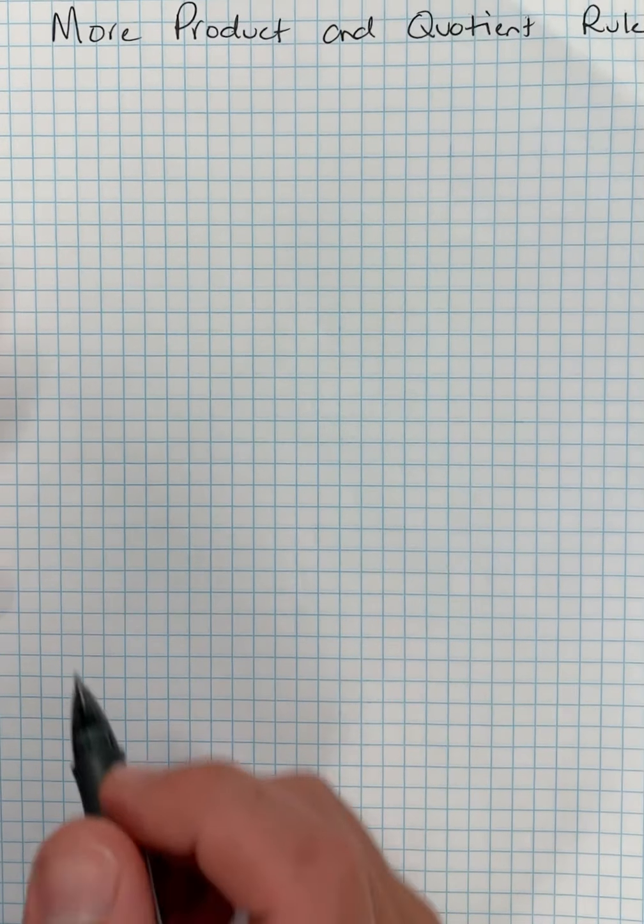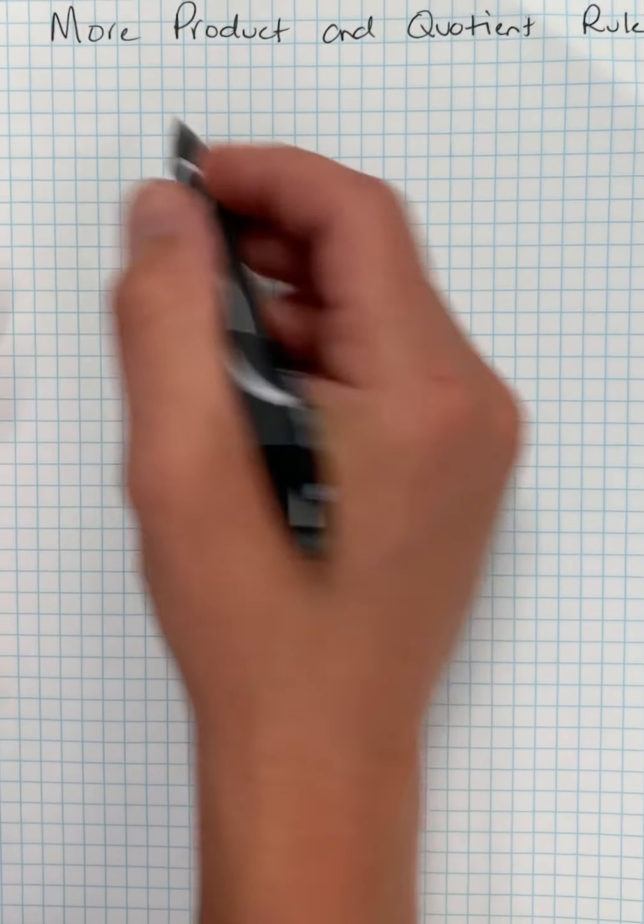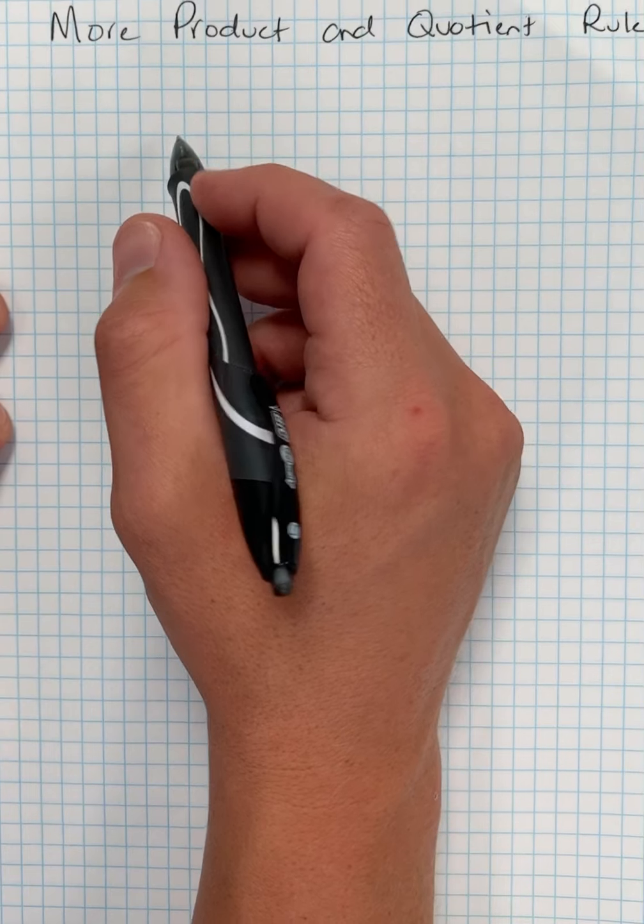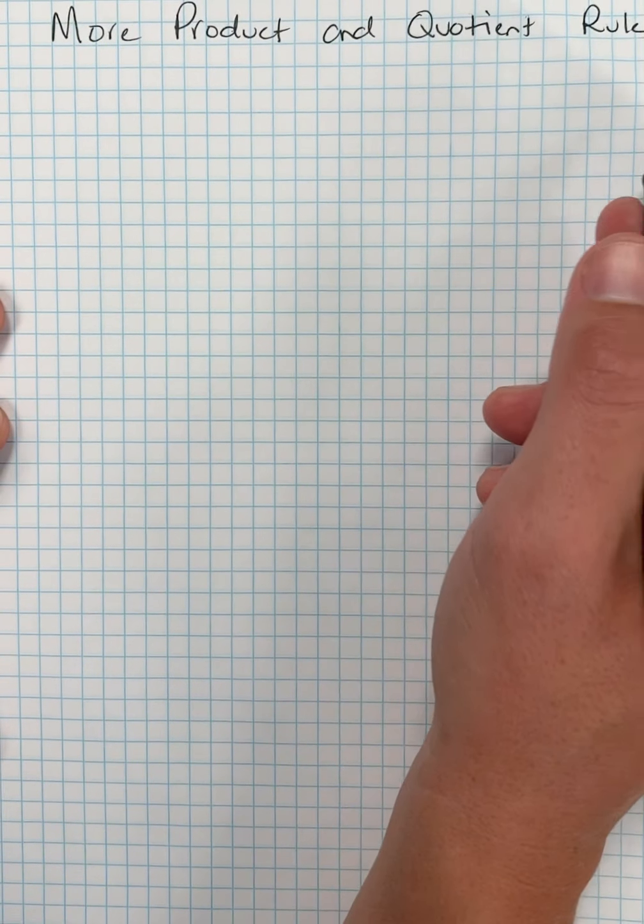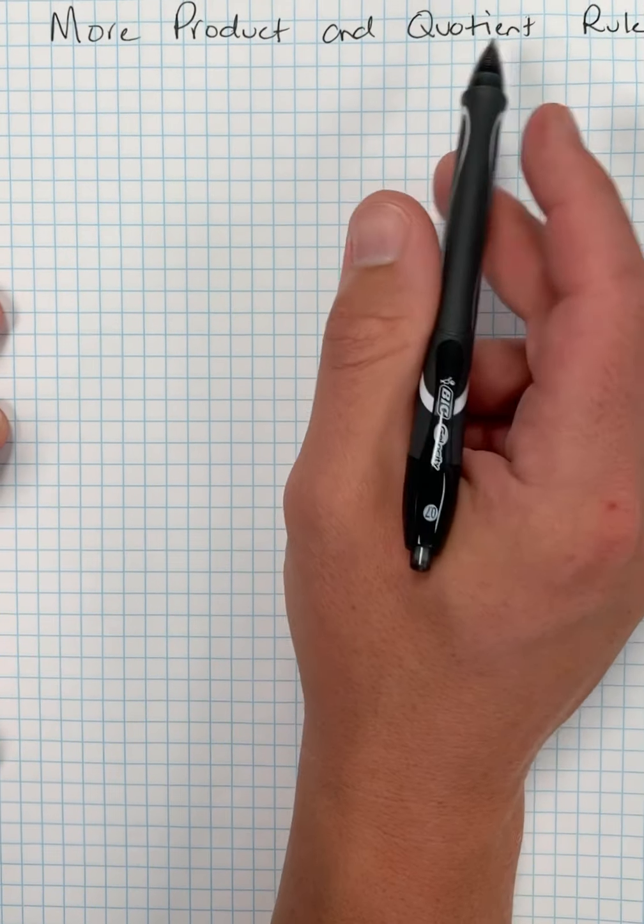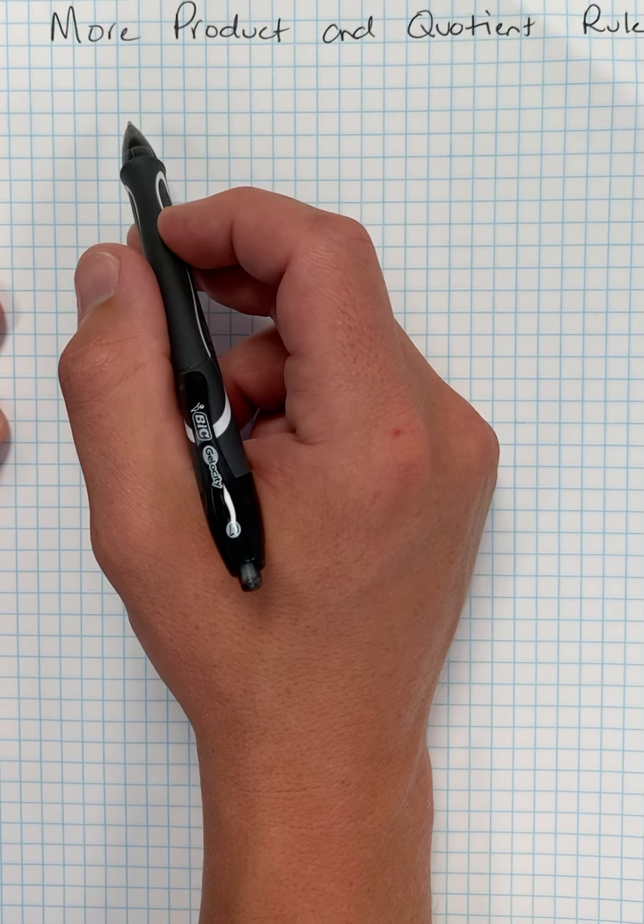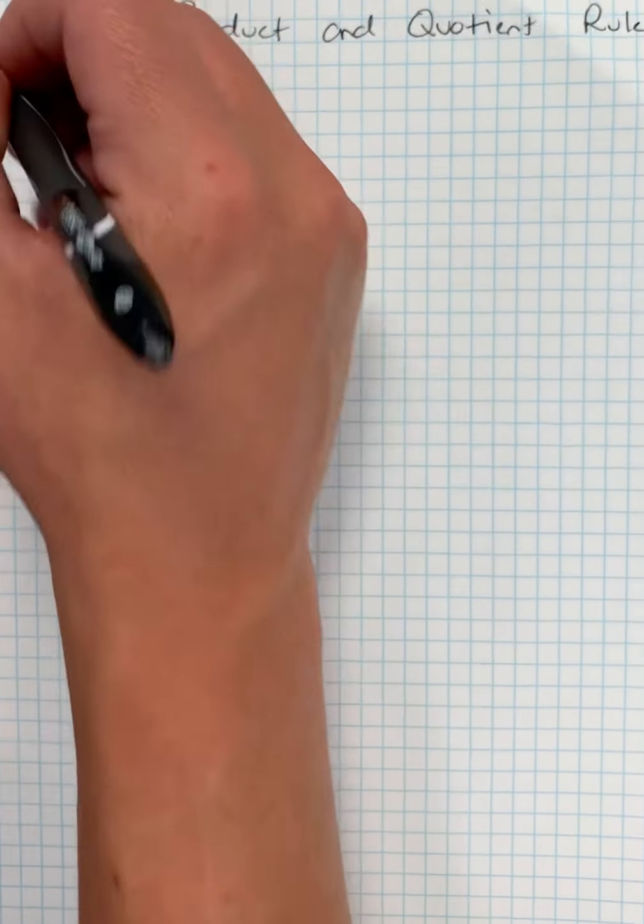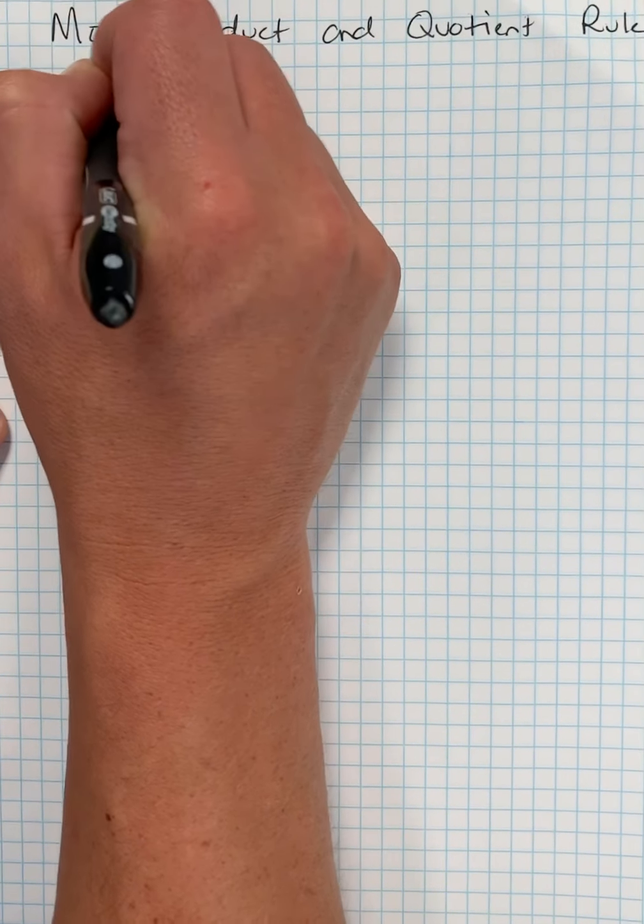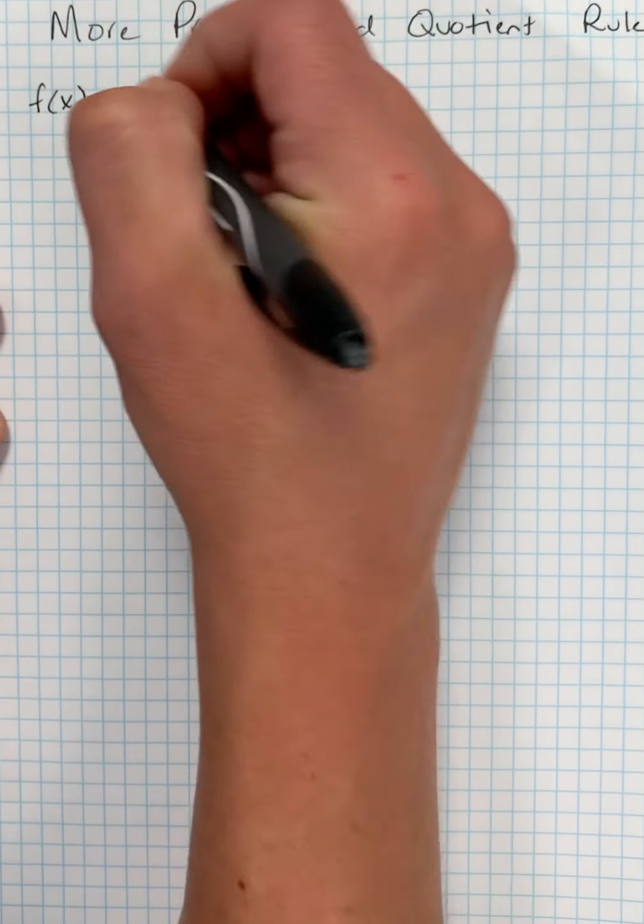Okay, by popular demand, I've been asked to do some more product and quotient rule examples. I'm going to spit off some functions and find the derivative of those functions. I'll use a variety of notations. We'll see if we can get some product rules, some quotient rules, maybe even some trig derivatives and some e to the x, some natural log, and see if we can mix some things up.